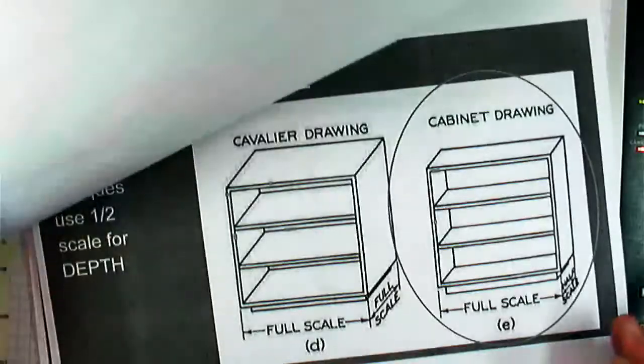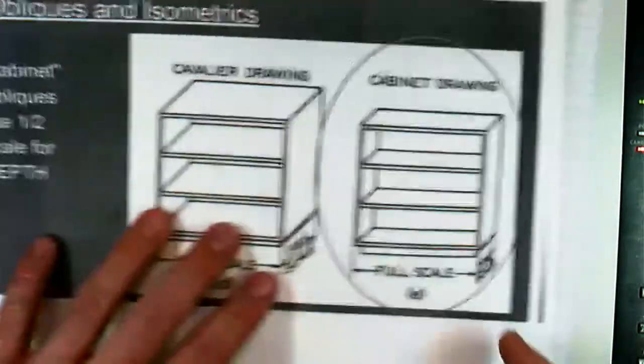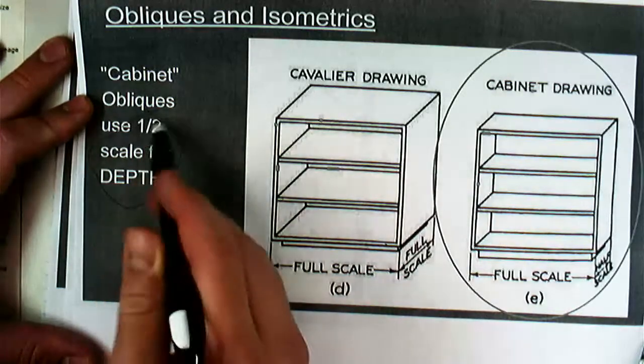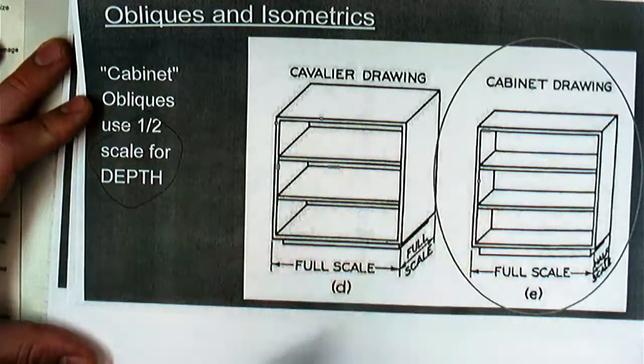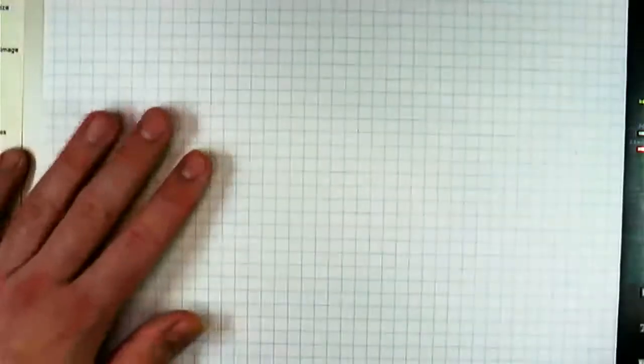And so the idea behind this is that if you are drawing full scale with a cavalier oblique, it has that weird look to it. But when you do a cabinet drawing, it is half scale for the depth. So the actual depth, the diagonal, the 45-degree, will cut all of those numbers in half. So you'll see that play out here as I do these examples.